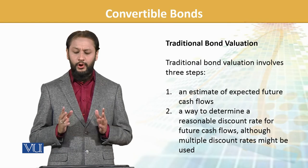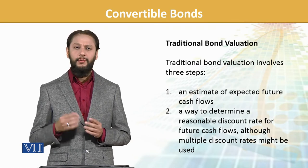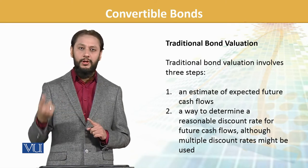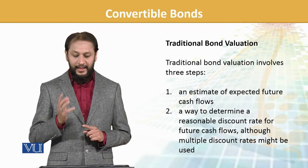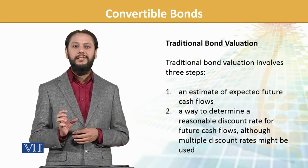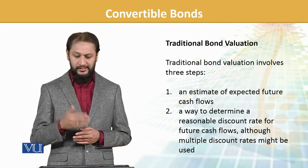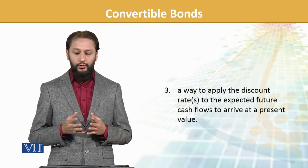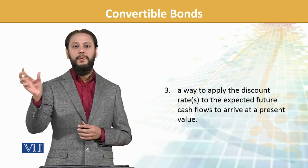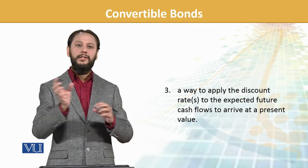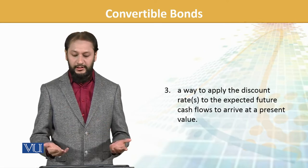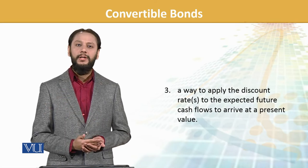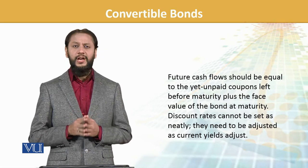Traditional bond valuation involves three simple steps: first, estimate expected future cash flows — maturity value اور coupons دونوں۔ Second, determine a reasonable discount rate with a logical base for adopting it. Third, apply that discount rate to the expected cash flows — اس expected discount rate کی implication کر کے ابھی کی value نکالیں۔ In the traditional model, the bond's value is determined from future cash flows.